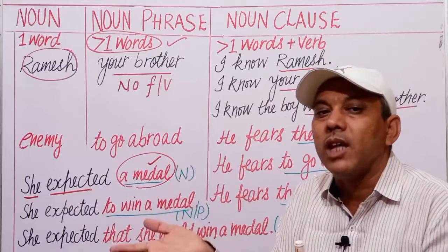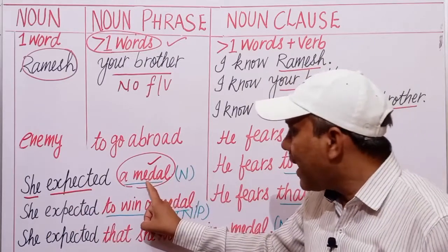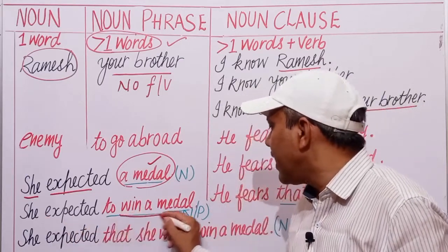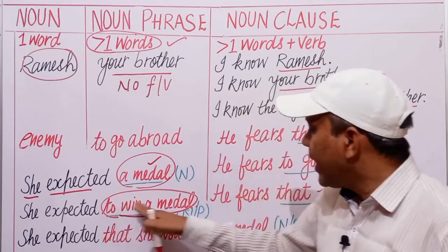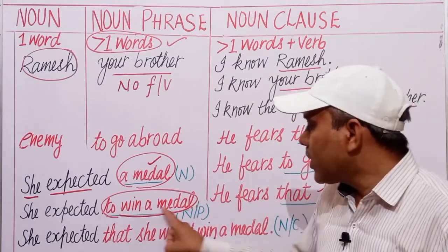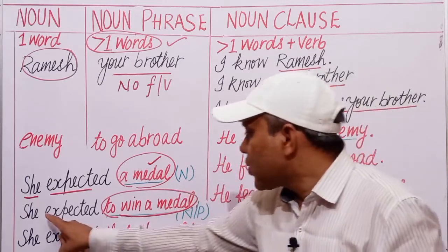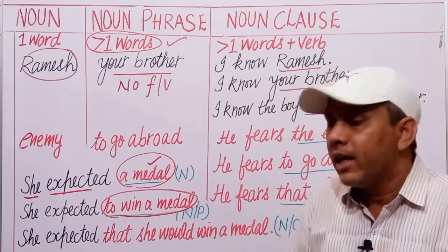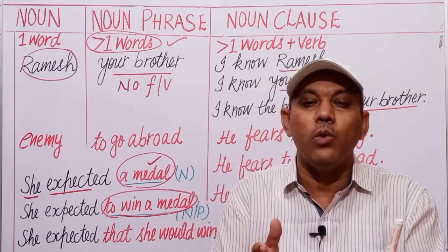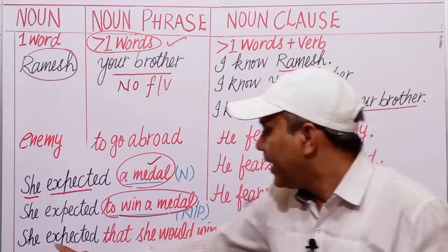She expected something — she expected a medal. Now let us convert this noun into a noun phrase: 'She expected to win a medal.' 'To win a medal' is a phrase, not a clause, because it has no finite verb. She expected something — this phrase acts as a noun, that is why it is known as a noun phrase.